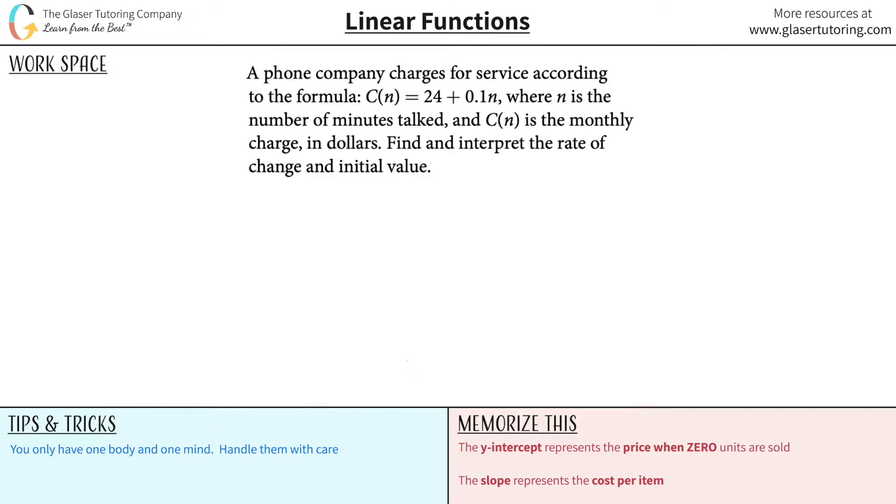A phone company charges for service according to the formula C of n is equal to 24 plus 0.1n, where n is the number of minutes talked and C of n is the monthly charge in dollars. Find and interpret the rate of change and initial value.